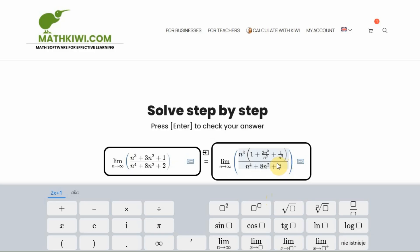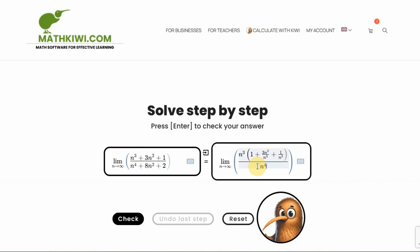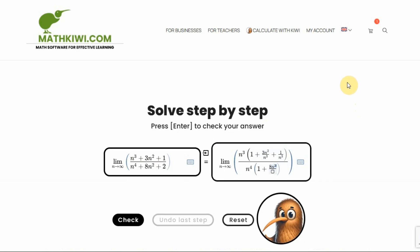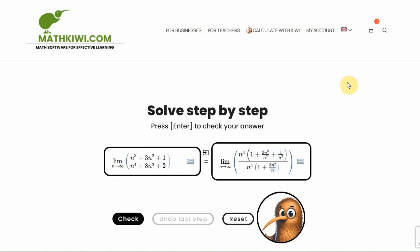I am doing the same thing analogously in the denominator. Analogously, but not exactly the same, because the highest power in the denominator is n to the fourth. So, I factor out n to the fourth. And what's left here? n to the fourth divided by n to the fourth is 1 plus 8n squared divided by n to the fourth. I divide by n to the fourth. Plus, 2 divided by n to the fourth.